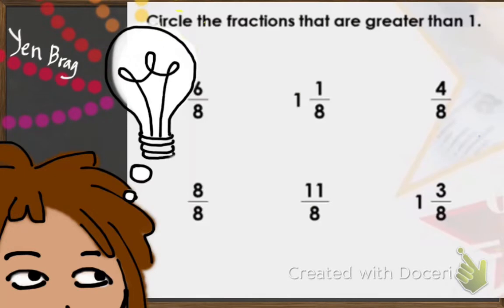Let's try this practice question: circle the fractions that are greater than 1. We have 6 over 8. 6 over 8 is a proper fraction. A proper fraction is when the numerator is smaller than the denominator, so a proper fraction is not greater than 1.